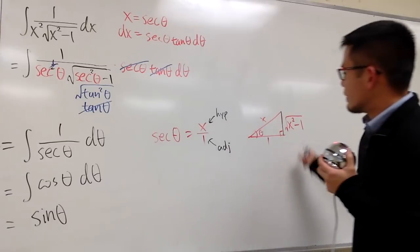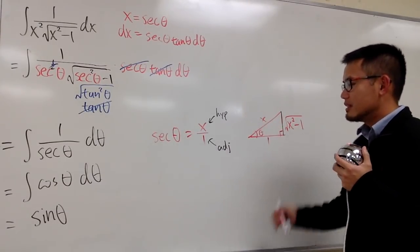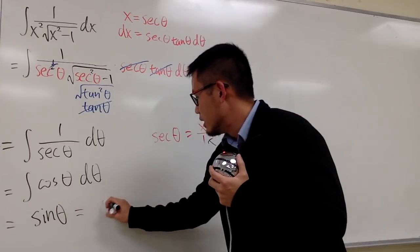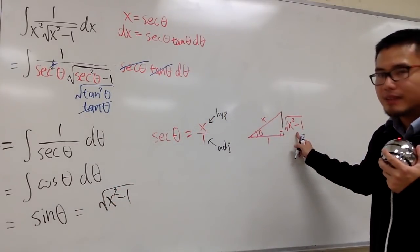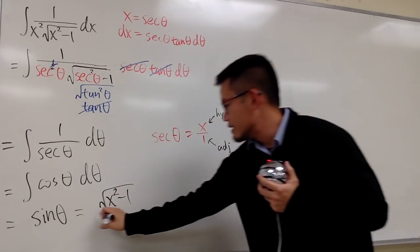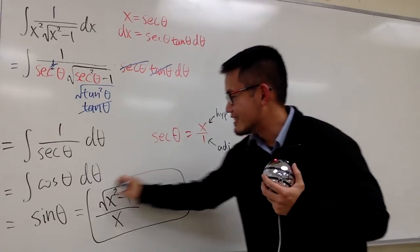Sine theta, from this picture, we know it's the opposite over hypotenuse. So we have this. This is going to be square root of x squared minus 1, and then over x. And we are done. Put a plus C.